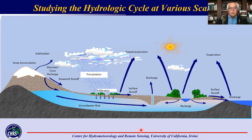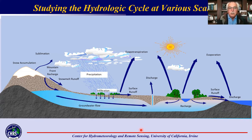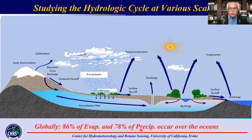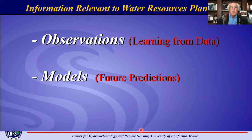As a hydrologist and hydroclimatologist, we are interested in understanding how the water cycle on our planet functions. Its elements are precipitation, runoff, evaporation, and both surface runoff and groundwater. In order to better understand and model this, we require information. We try to observe the system, learn from the data, and use that knowledge to develop models for future predictions.